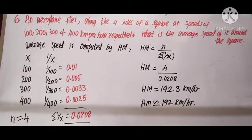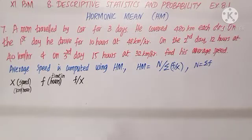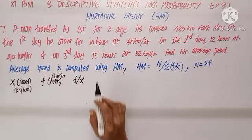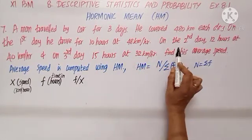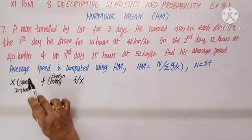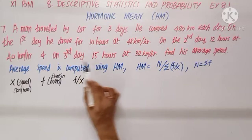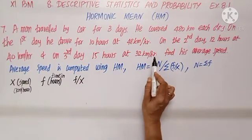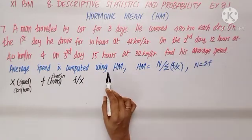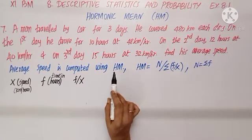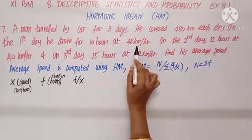Question number 7: A man traveled by car for three days. He covered 480 kilometers each day. On the first day he drove 10 hours at 48 km/h, on the second day 12 hours at 40 km/h, and on the third day 15 hours at 32 km/h. Find his average speed.